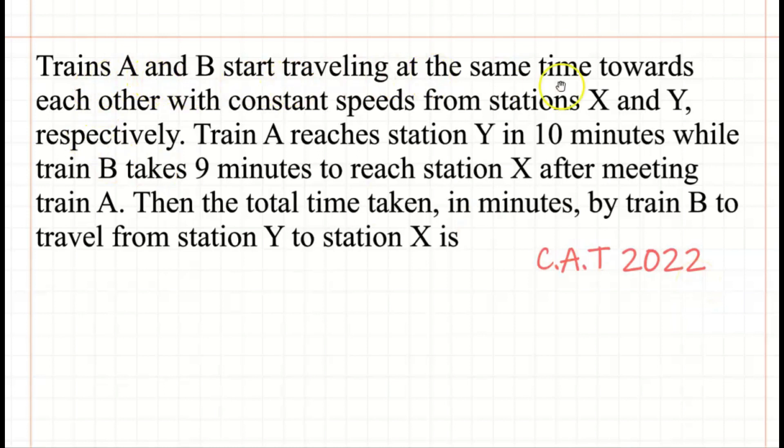Trains A and B start traveling at the same time towards each other with constant speeds from stations X and Y respectively. Train A reaches station Y in 10 minutes, while train B takes 9 minutes to reach station X after meeting train A. Then the total time taken, in minutes, by train B to travel from station Y to station X is...